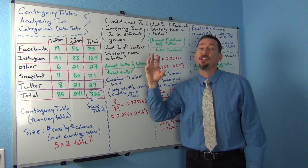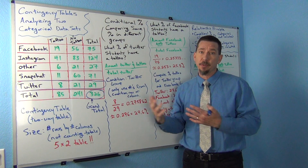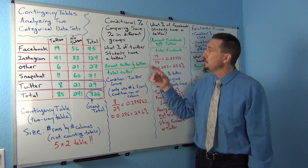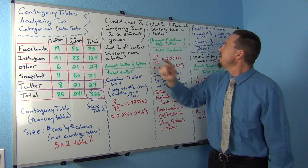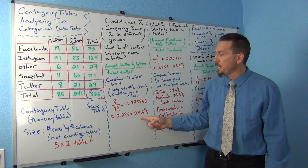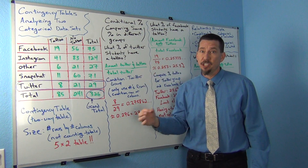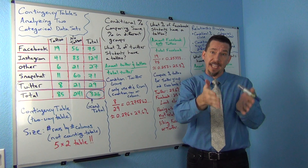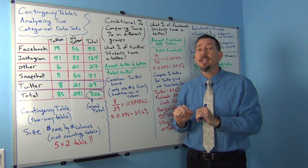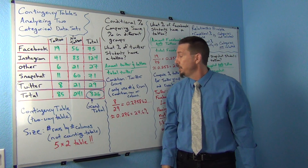The key thing in conditional percentages is you want to compare that to another group. The comparison of conditional percentages really tells us how much of a relationship there is. I'm going to compare Twitter students to Facebook students using the same variable — percentage with a tattoo — but for different groups. You don't want to compare percentage of tattoo to percentage of no tattoo, because those are different things.